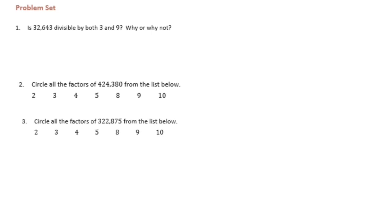The divisibility test for 3 is that we find the sum of the digits, and if the sum of the digits is divisible by 3, then the number is divisible by 3. Same for 9 — if the sum of the digits is divisible by 9, then the number is divisible by 9. So let's find the sum of the digits.